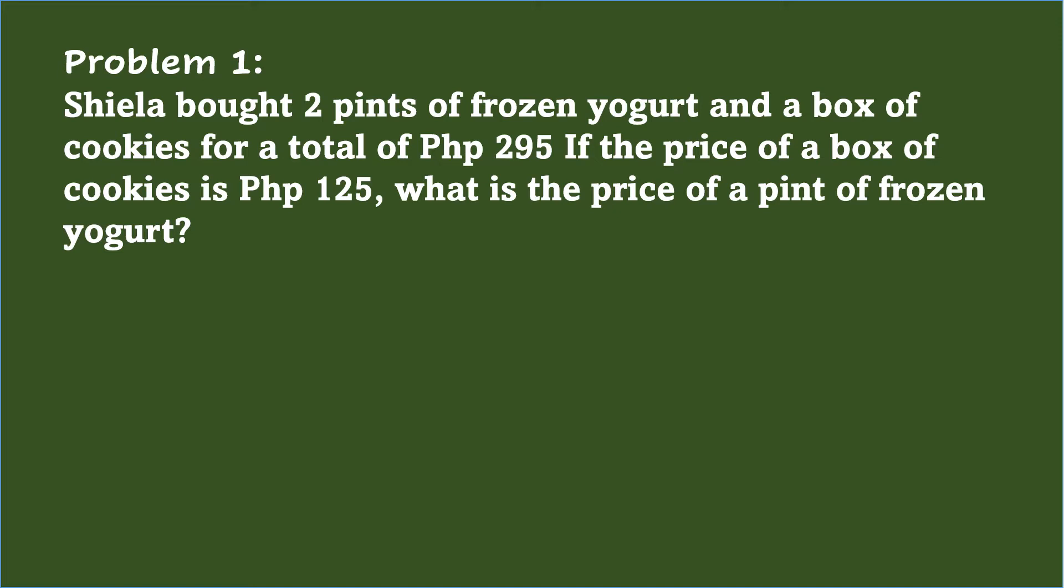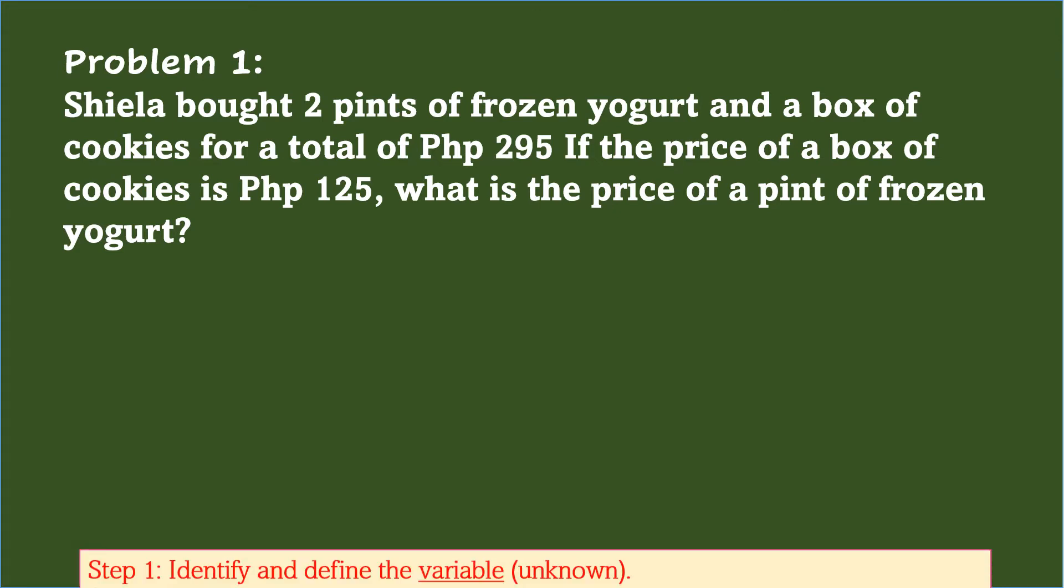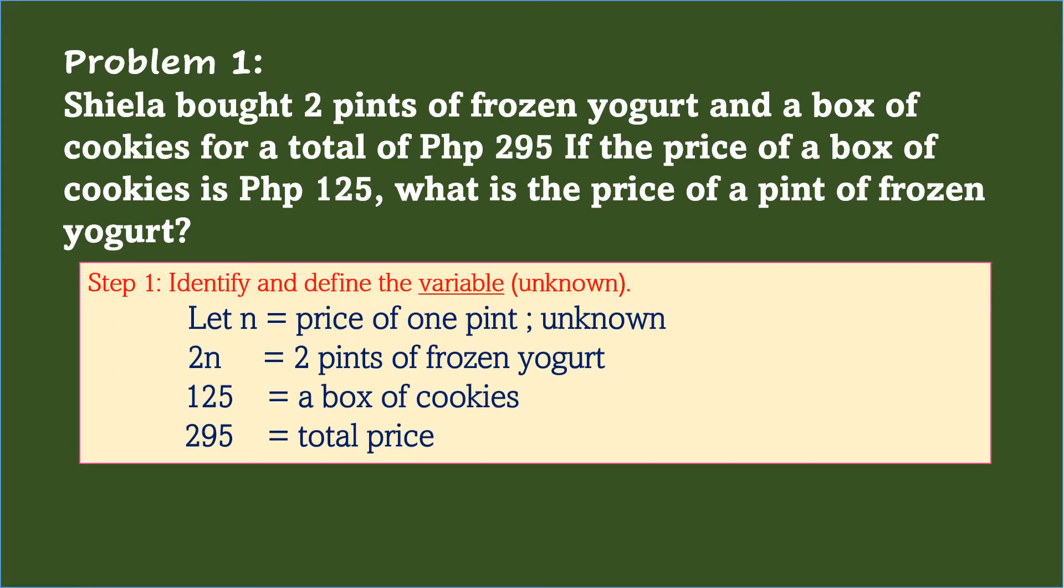The first step in solving word problems involving expressions and equations is to identify and define the variable, which is the unknown. With this problem, the price of a pint of frozen yogurt is missing, so that will be the unknown.